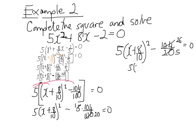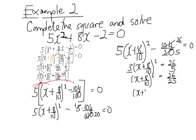I've got 5 lots of x plus 4 over 5, all squared. I'm going to take my minus 26 over 5 to the other side to get 26 over 5. Then I divide through by 5, which gives me x plus 8 over 10 squared equals 26 over 25. Taking the square root of both sides gives me root 26 over 5. Then x equals minus 8 over 10, which simplifies to minus 4 fifths, plus or minus root 26 over 5.